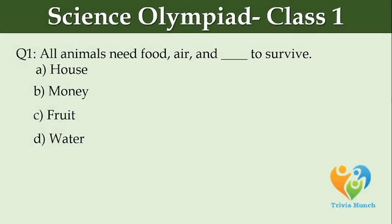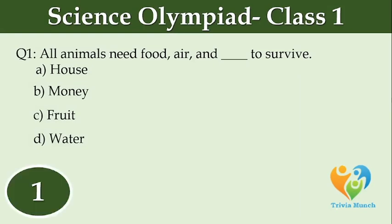All animals need food, air, and dash to survive. Option A: House. Option B: Money. Option C: Fruit. Option D: Water.